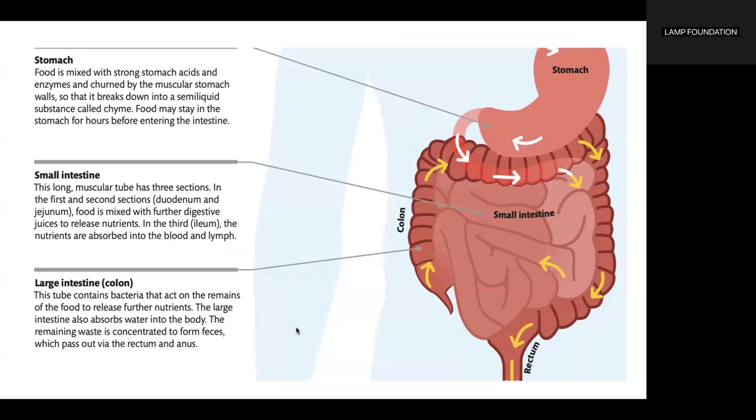The small intestine is a long muscular tube with three sections. In the first and second sections — the duodenum and jejunum — food is mixed with further digestive juices to release nutrients. In the third section, the ileum, nutrients are absorbed into the blood and lymph.